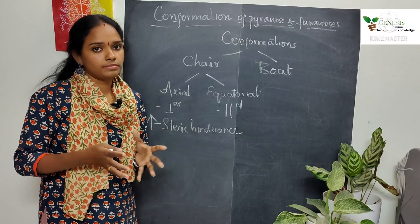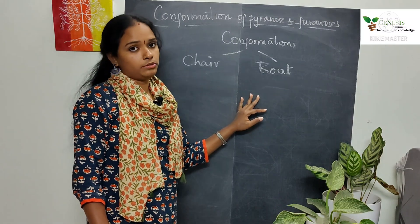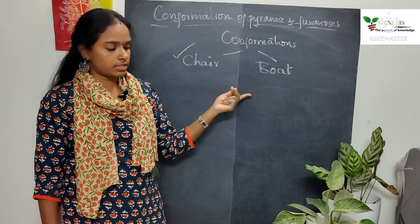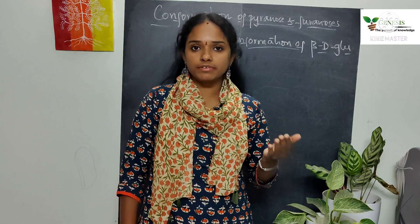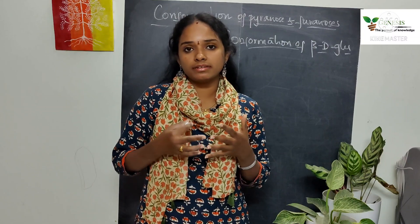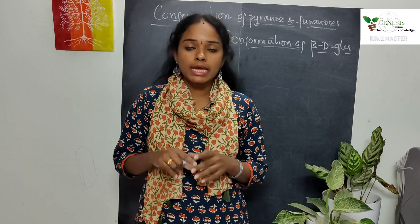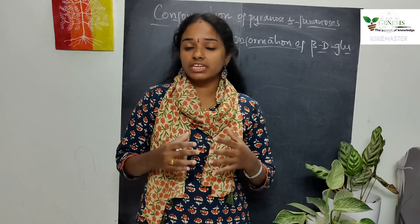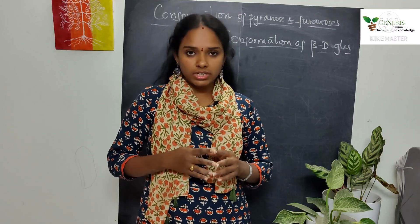Let's look at the example of D-glucose. Beta D-glucopyranose is more predominant than alpha D-glucopyranose — around 64% of the equilibrium mixture contains beta D-glucopyranose, while only 36% exists in the alpha D-glucopyranose form. The question is: why does the equilibrium mixture contain more beta D-glucopyranose?